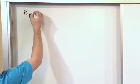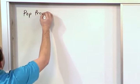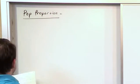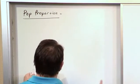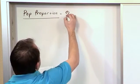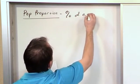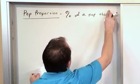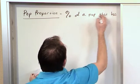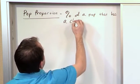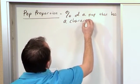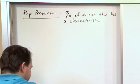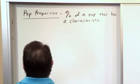So I'm going to call it population proportion. There are a bunch of different definitions, but in my definition, it's the percentage of a population that has a characteristic. That's kind of a nebulous definition, but it's very simple when I give you an example.